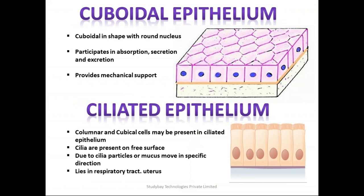Cuboidal epithelium is cuboidal in shape with a round nucleus. It participates in absorption, secretion, and excretion, and provides mechanical support to the body. Ciliated epithelium can contain both columnar and cuboidal cells. The cilia are hair-like structures present on the free surface, and their main job is to prevent the backward movement of mucus — mucus should move in a single direction only. Cilia are found in the respiratory tract and uterus.